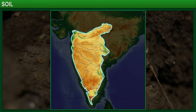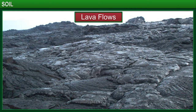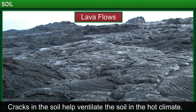For example, the soil in the Deccan Plateau region in India is mostly made up from lava flows and is sticky. Since that region is very hot, the soil tends to develop long cracks. This helps to ventilate the soil.